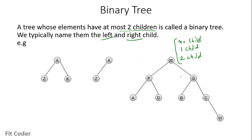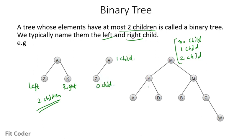Here are some examples of binary trees. In the first case, Z is the left child and K is the right child. In the second tree, A has only one child and Z has no child. If you see all the nodes of the tree either have two children, one child, or no child. So these three trees are binary trees.